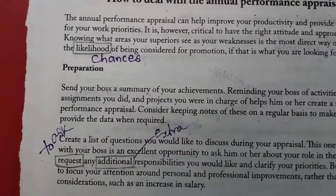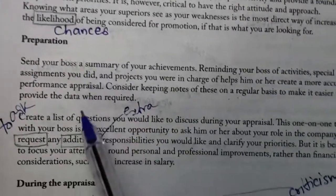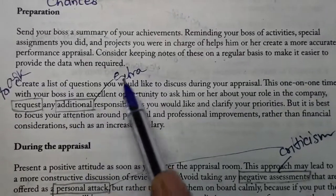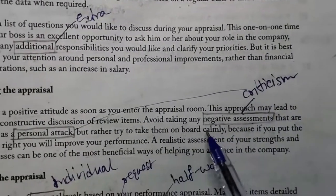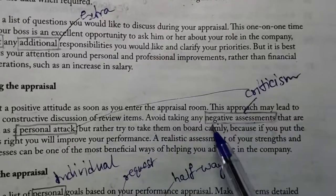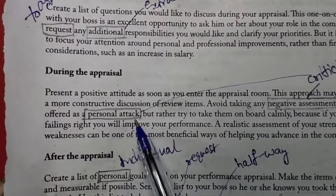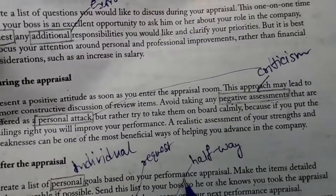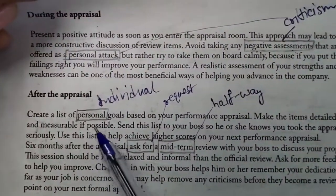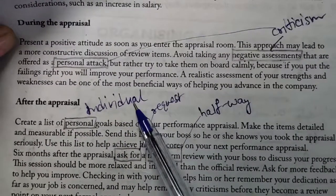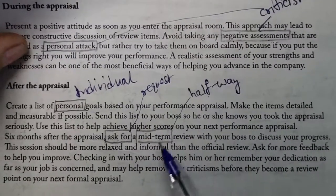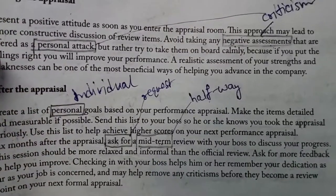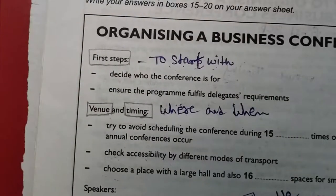These are all synonyms which I found in the reading passage. Let me show you the locations. 'Likelihood' is 'chances,' 'additional' is 'extra,' 'request' is 'to ask.' For 'criticism,' the writer has used two synonyms: 'negative assessments' as well as 'personal attacks.' For 'personal' it is given 'individual' in the question. For 'halfway' it is given 'midterm.' Let's move on to the next passage.